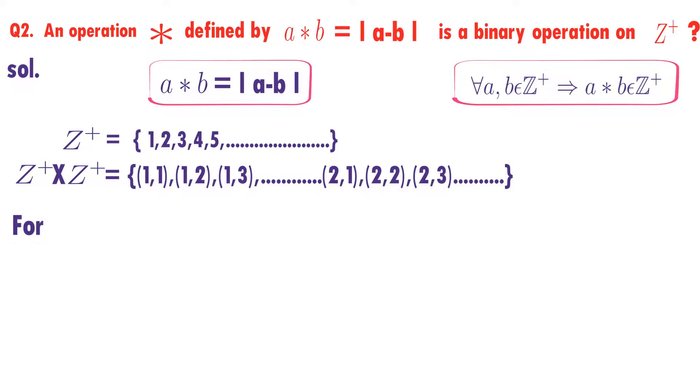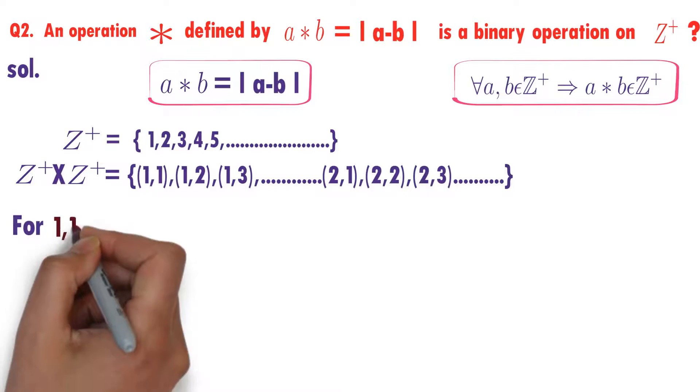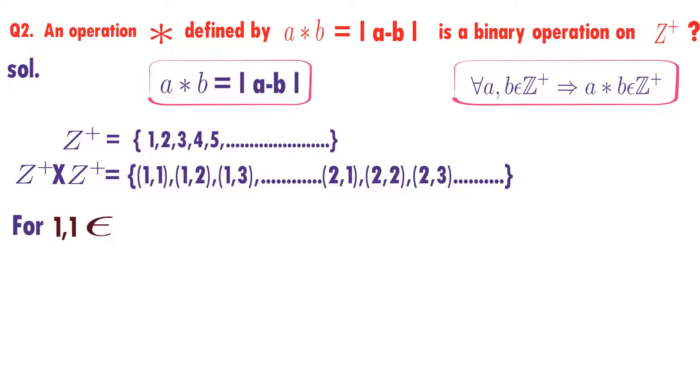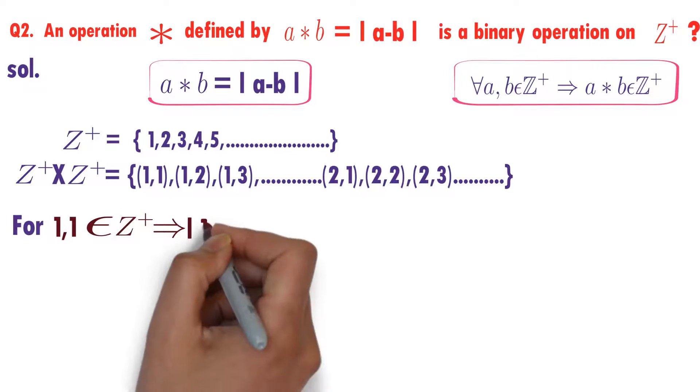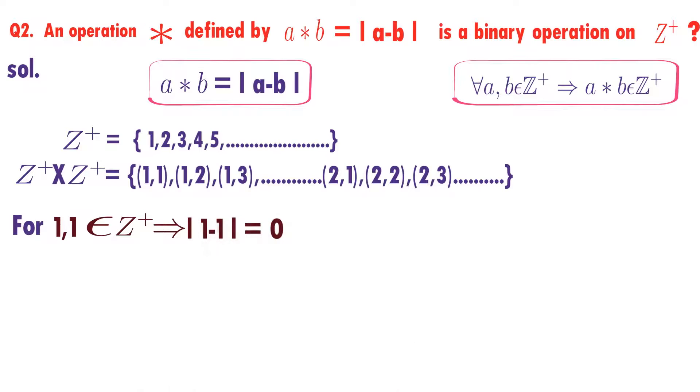Now for an ordered pair (1,1), both are positive integers. According to how star is defined, modulus of 1 minus 1 is 0. Is zero a positive integer? No, zero is not a positive integer. That means 1 star 1 does not belong to Z plus.